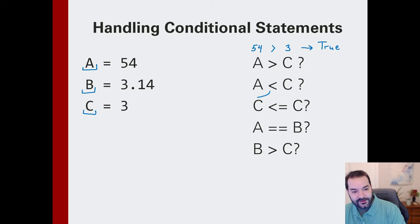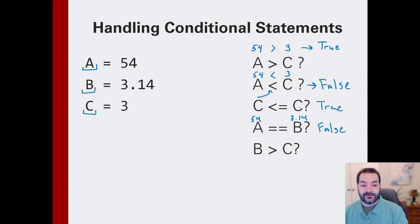That's why when we do the converse, if I said is A less than C, we're not saying yes or no. We're evaluating if this is a true statement or not. Is A less than C? We're saying 54 less than 3. We all know that is a false statement. And to continue with that idea, is C less than or equal to C? Is 3 less than or equal to 3? That is a true statement. Is A equal to B? Is 54 equal to 3.14? False. And finally, is B greater than C? Is 3.14 greater than 3? That's a true statement.